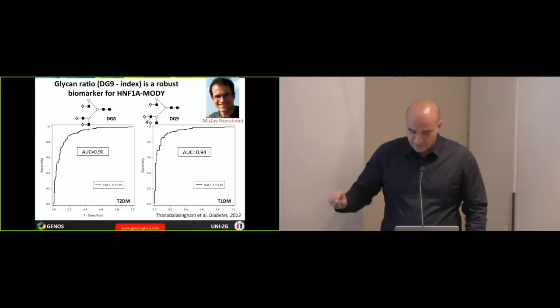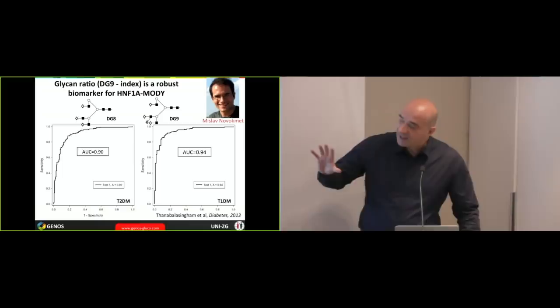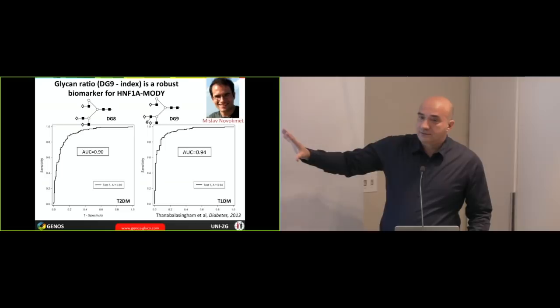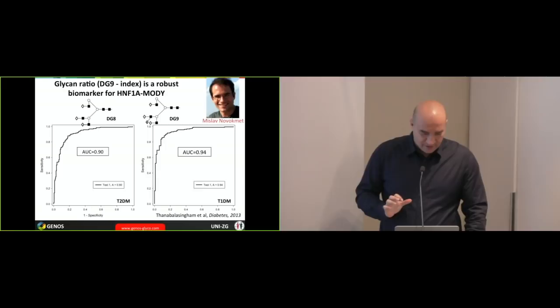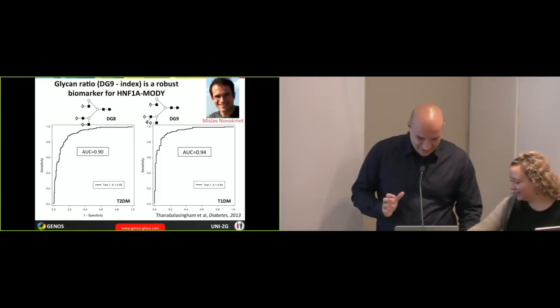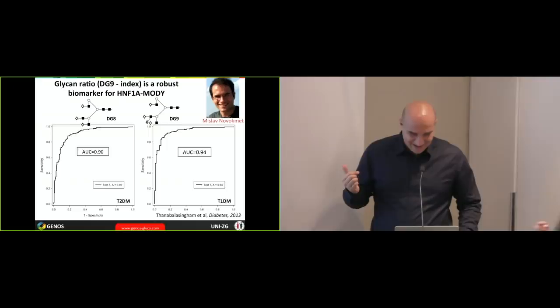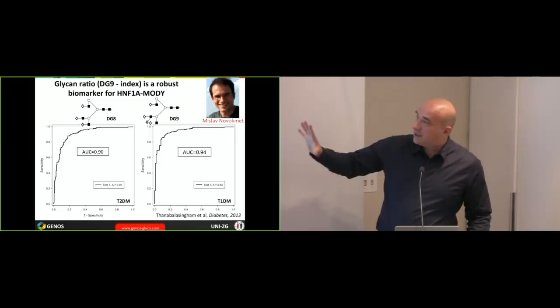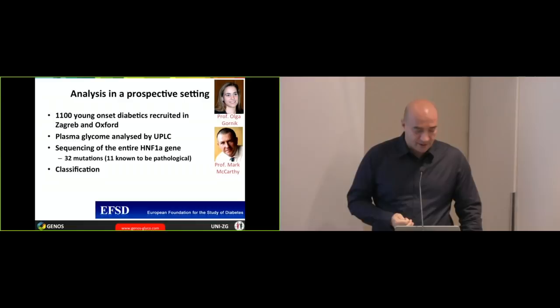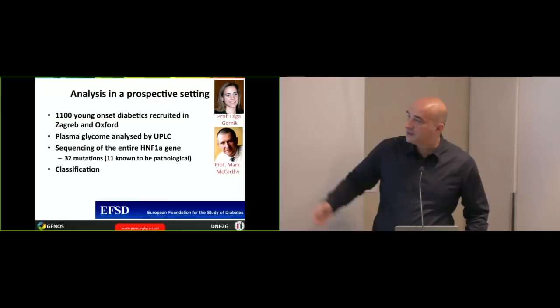And when you look at the biomarker potential, this seems to be... So, it turned out to be a pretty good biomarker. So, we did a prospective clinical trial by recruiting 1,100 people, half in Zagreb, half in Oxford, sequencing everybody, doing glycans on all of them. We did together with Mark McCarthy. It was led by Professor Olga Gornik from my group. And we showed... Actually, the first result was quite disappointing. When we looked at all the mutations on HNF1-alpha, they were not really... Glycans were not really predictive.